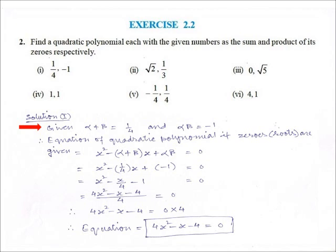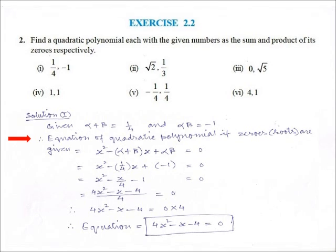Here we have two numbers. The first number for part 1 is 1/4, which is the sum of zeros, and the second number is minus 1, that is the product of the zeros. Therefore, given alpha plus beta is equal to 1/4, and alpha into beta is equal to minus 1.